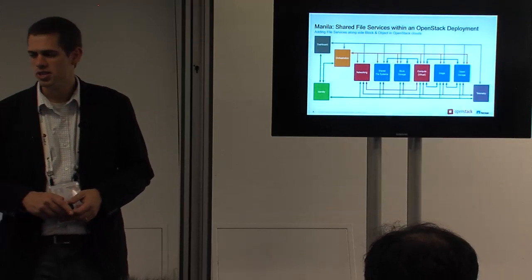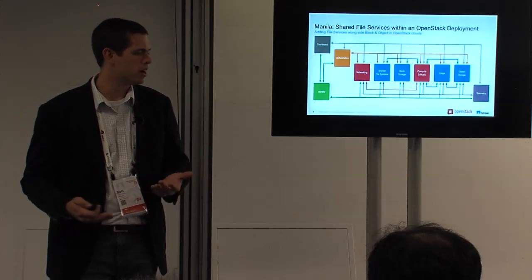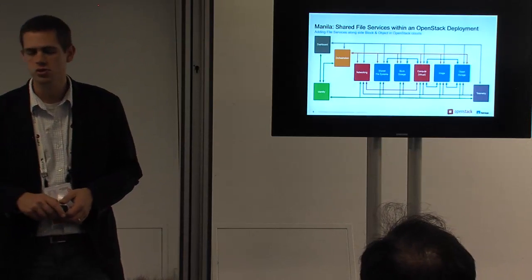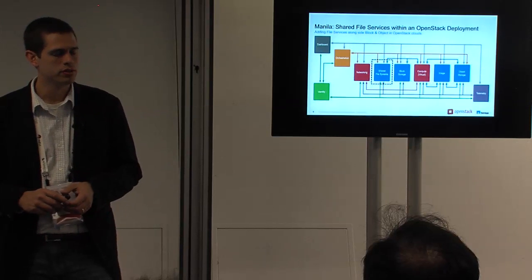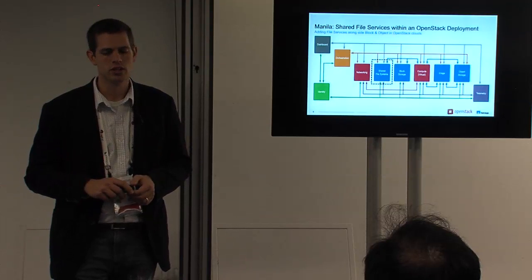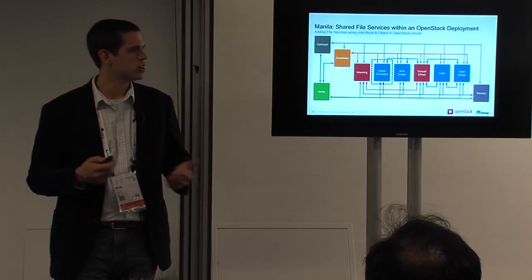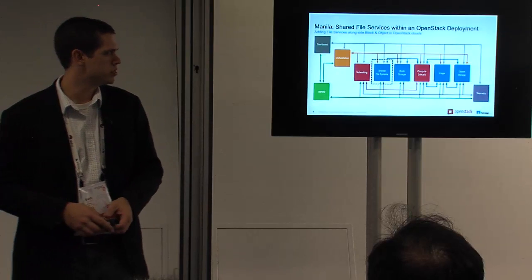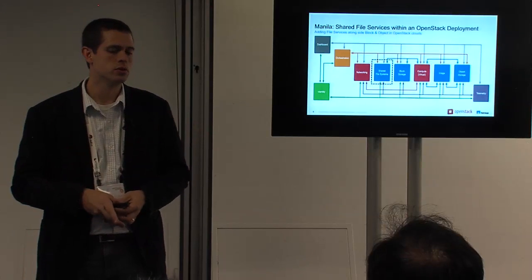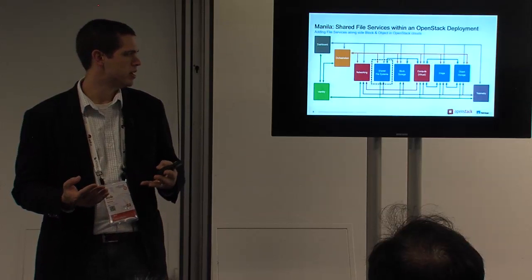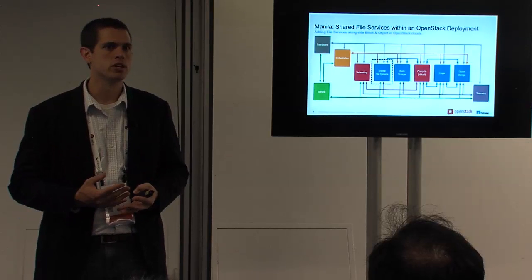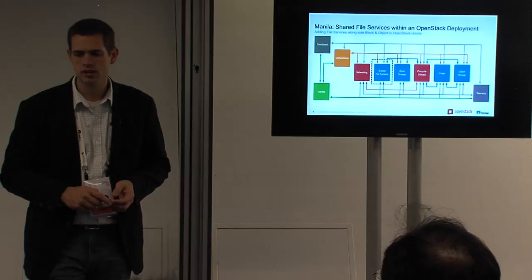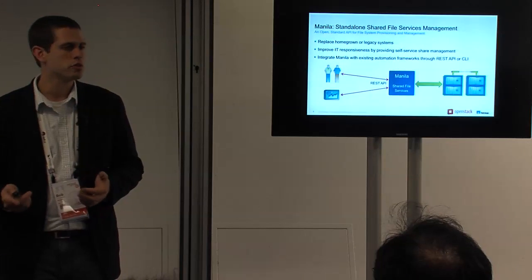Diving into a couple of different use cases: certainly the most natural is seeing shared file systems alongside block and object storage within OpenStack. This gives you a logical diagram showing all the core OpenStack services with Manila — the shared file system service — sitting inside that architecture, interacting with other services like Cinder, Nova, and Neutron as it provisions infrastructure. One of the major aims for Manila is that anytime I deploy an OpenStack cloud, I should see that file share service sit alongside block and object.